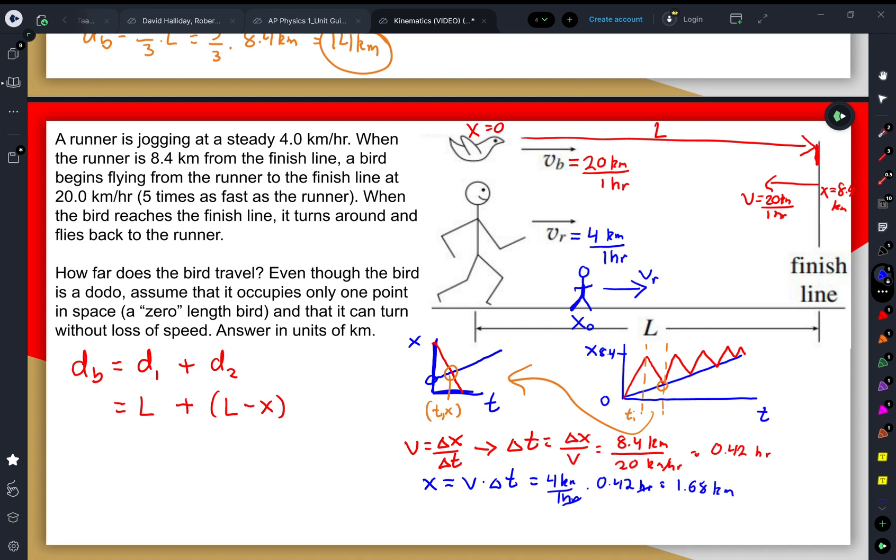The reason why this is going to be important is that means we can write two equations. We can write down a function to figure out the position of the runner. They are traveling at that velocity of 4 kilometers every one hour times how long they're traveling for plus their starting position of 1.68 kilometers.